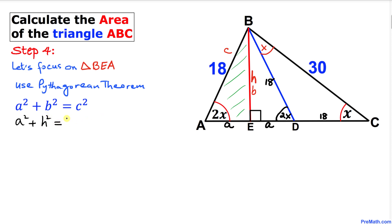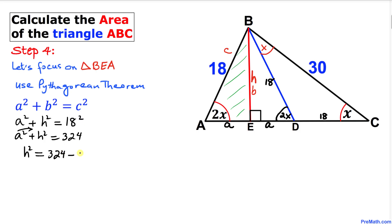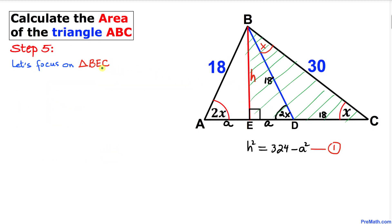Simplifying: A² + H² = 324. Isolating H²: H² = 324 − A². I'll call this equation number one.